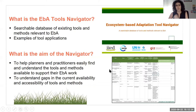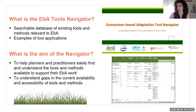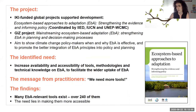At its core, the EBA Tools Navigator is a database of tools and methods that are relevant for EBA. It also contains a collection of examples of tool applications and has been designed to help users find the most appropriate tools and methods to support their EBA work, and also to help understand which gaps exist in terms of current availability or accessibility of tools.